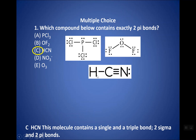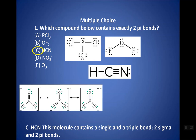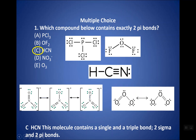NO3⁻ actually has resonance — one structure cannot accurately depict it, so we'd have to draw all three. These bonds are not actually a double and two singles; they are three bonds of the same length, a hybrid between a double and a single bond. When figuring out sigma and pi for a resonance structure, look at just one resonance structure. One resonance structure of NO3⁻ has three sigma and one pi. Similarly, O3 has resonance — looking at one resonance structure, it has two sigma and one pi.